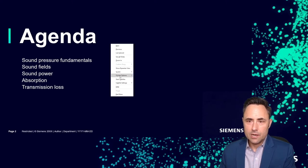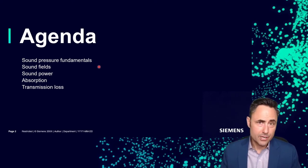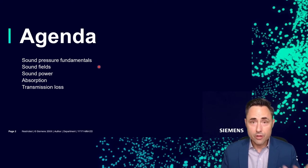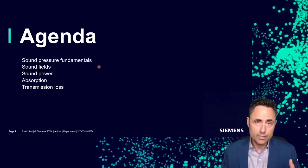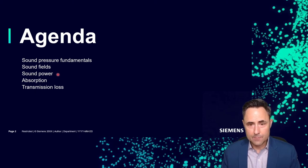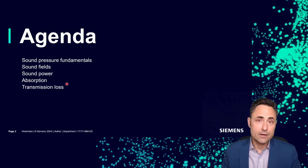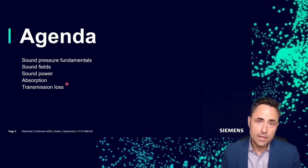As far as an agenda goes, we're going to talk about some of the fundamentals that go into making a sound pressure measurement — realistically, sound pressure measurement is almost the only measurement we can actually make for acoustics. We'll talk about the sound field, sound power, and two ways we control sound: absorption and transmission loss, including how we test for those and what the values mean.